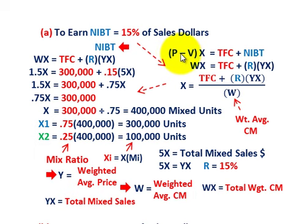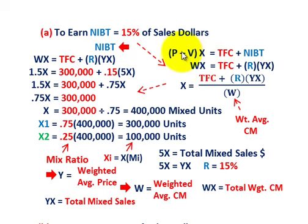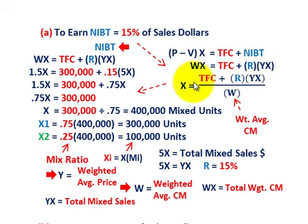So the weighted contribution margin times units equals total fixed cost, and net income before taxes is that rate times total mixed sales. Solving for X by factoring everything out: X equals (total fixed cost plus rate times total mixed sales) divided by W, the weighted average contribution margin. That's our general equation, and we can substitute our values directly into our solution.